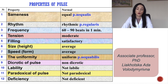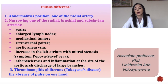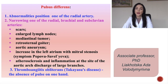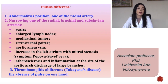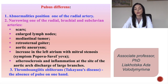Pulsus differens can occur during abnormalities in the position of one of the radial arteries, or during narrowing of the radial, brachial, or subclavian arteries — for example after scars, enlarged lymph nodes, mediastinal tumor, retrosternal goiter, or aortic aneurysm. The Popov-Savelyev symptom occurs during increase of the left atrium with mitral stenosis. Also during atherosclerosis, inflammation at the site of the aortic arch, and Takayasu disease.